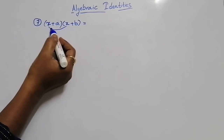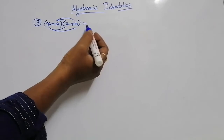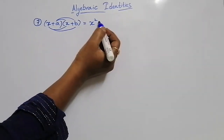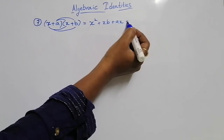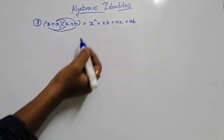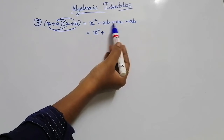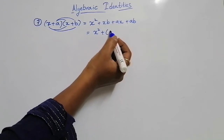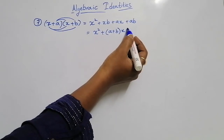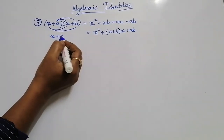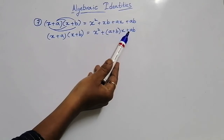So x into x gives x square. x into b gives plus xb, plus a into x gives plus ax, and plus a into b gives plus ab. See here — x square plus, in these two terms x is the common factor, so x times (a plus b). I have just combined these two terms. Plus a into b. So the formula is: x plus a into x plus b equals x square plus (a plus b) into x plus ab.